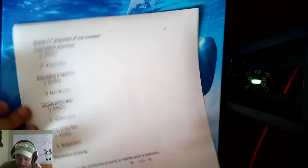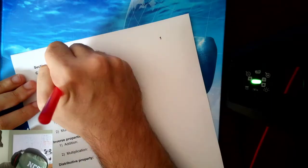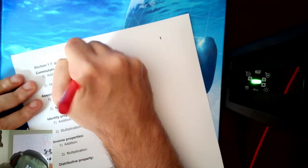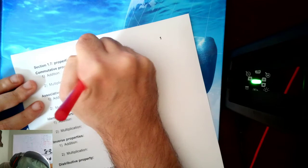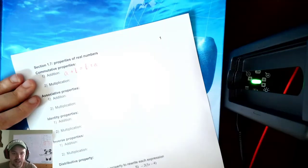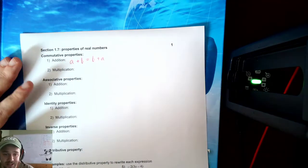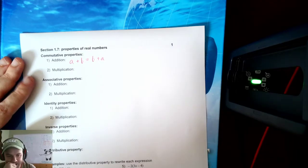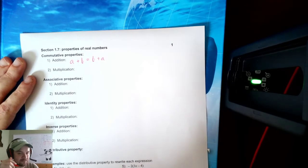First, the commutative properties. With addition, a plus b is the same as b plus a. You can add forwards and backwards with addition. Doesn't matter what order you're adding in. 2 plus 5 is the same as 5 plus 2.